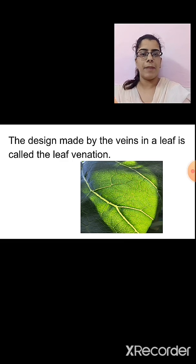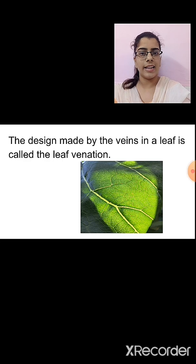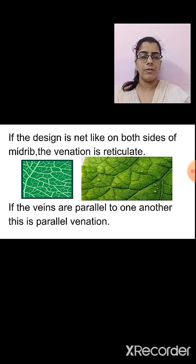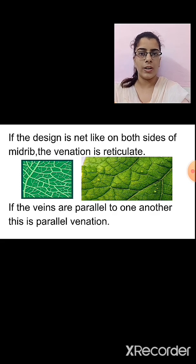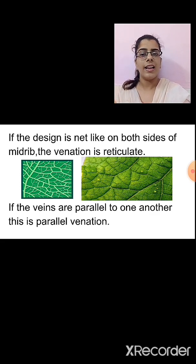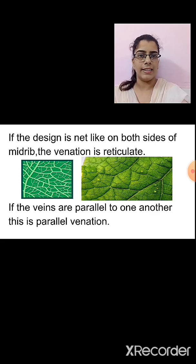The design made by the veins in the leaf is called leaf venation. There are two types of leaf venation. If the design is net-like on both sides of the midrib — an irregular structure of the veins — this kind of venation is called reticulate venation. If the veins are parallel to one another, this is called parallel venation.